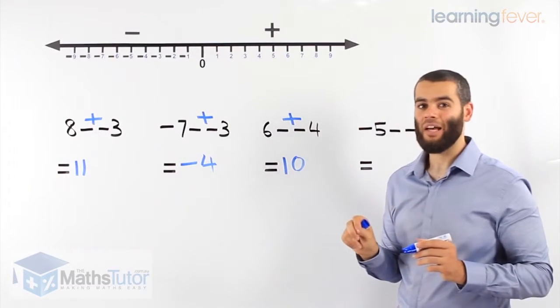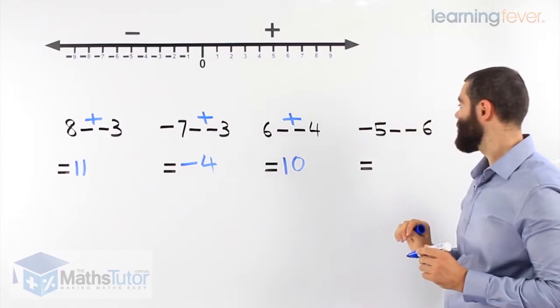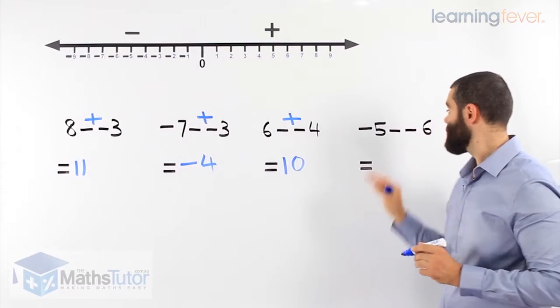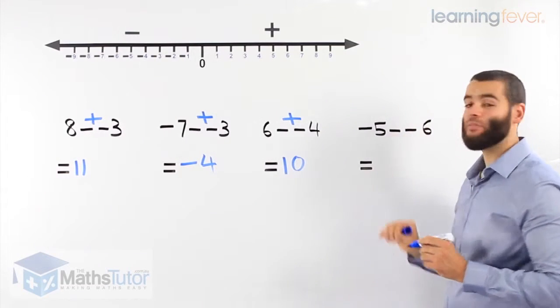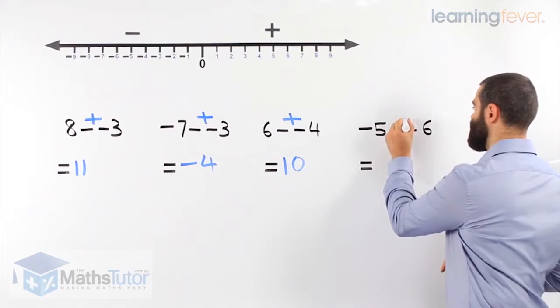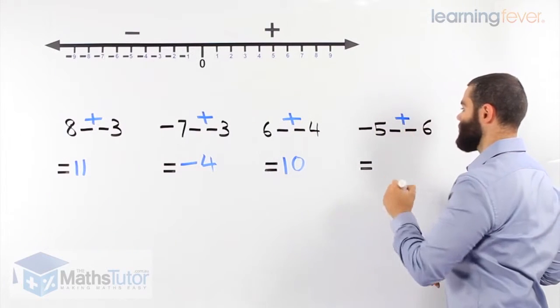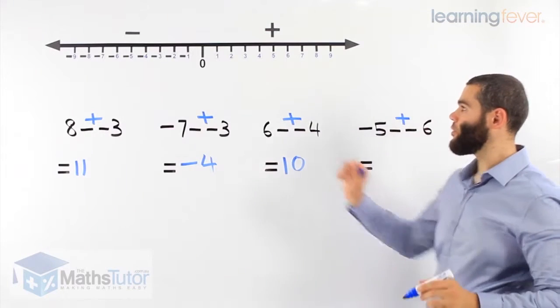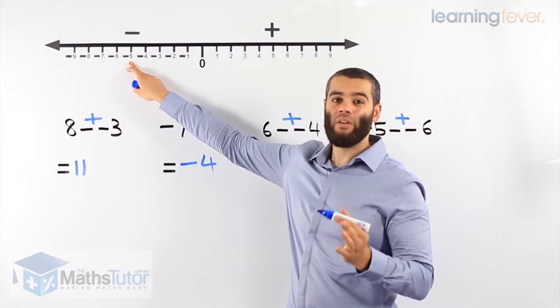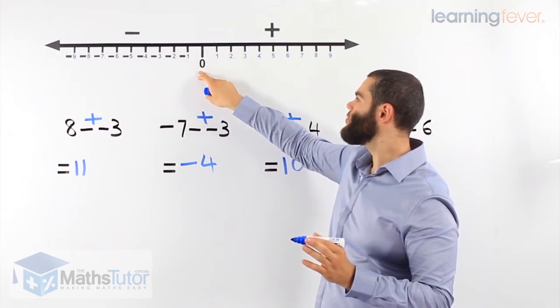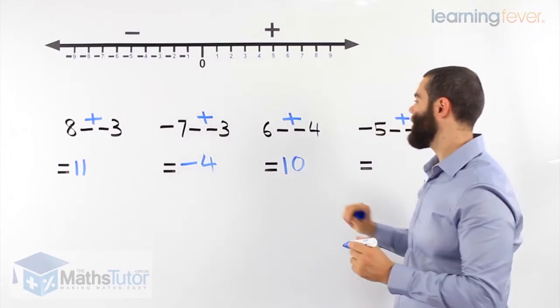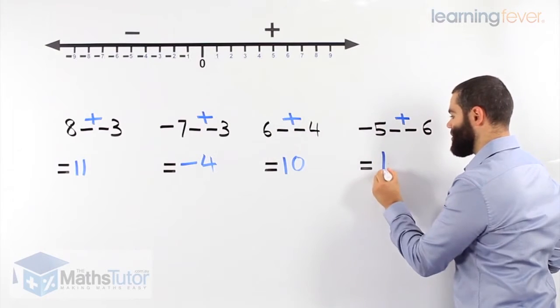Here we have negative 5 minus negative 6. Again, two negatives side by side become a plus. Negative 5 plus 6. We start at negative 5 and we add 6: 1, 2, 3, 4, 5, 6. Our answer is positive 1.